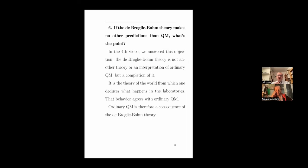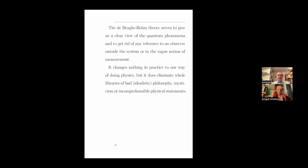If the de Broglie-Bohm theory makes no other predictions than quantum mechanics, what's the point of the theory? We answered this in the fourth video. The de Broglie-Bohm theory is not another theory or just an interpretation, but a completion of quantum mechanics. It is the theory of the world from which one deduces what happens in laboratories, and that behavior agrees with ordinary quantum mechanics — which is therefore a consequence of the de Broglie-Bohm theory. The theory serves to give us a clear view of quantum phenomena and to eliminate any reference to an observer or the vague notion of measurement. It changes nothing in practice but eliminates whole libraries of bad philosophy, mysticism, and incomprehensible physical statements.